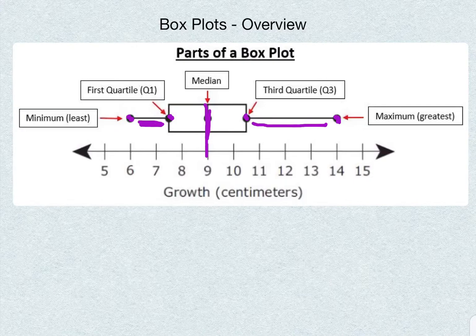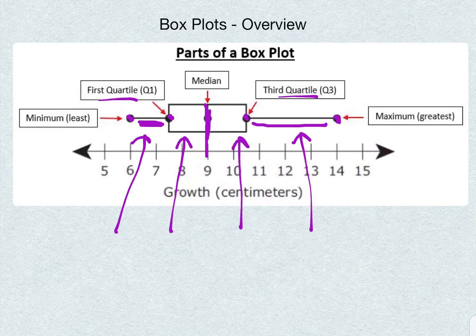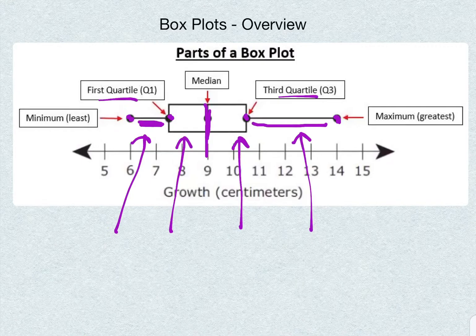Now each of these parts have the same amount of data points in them. The reason why these are called quartiles, it's because it's a quarter of the data, like 25 cents out of a dollar. It's 25 percent.